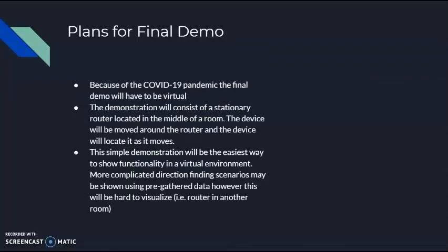Because of the COVID-19 pandemic, the final demo will have to be virtual. The demonstration will consist of a stationary router located in the middle of the room, the device will be moved around the router, and the device will locate it as it moves. This simple demonstration will be the easiest way to show functionality in a virtual environment. More complicated direction finding scenarios may be shown using pre-gathered data.